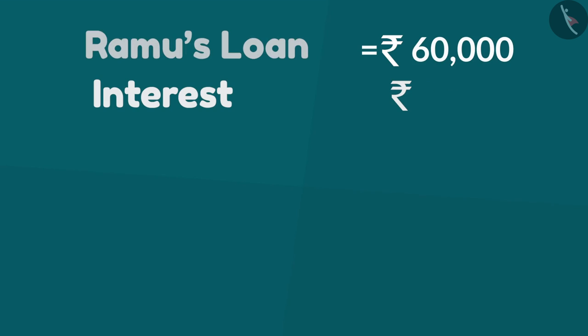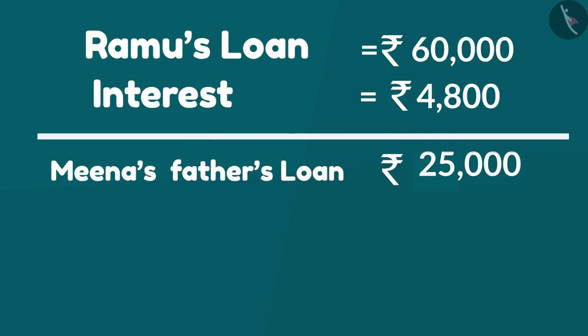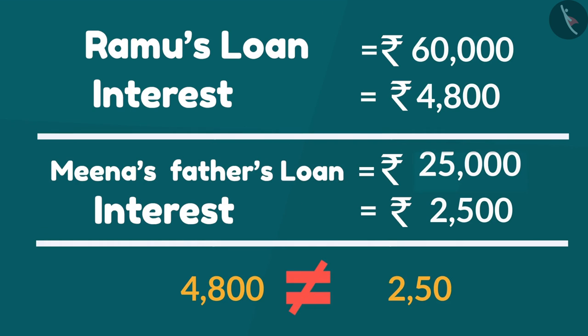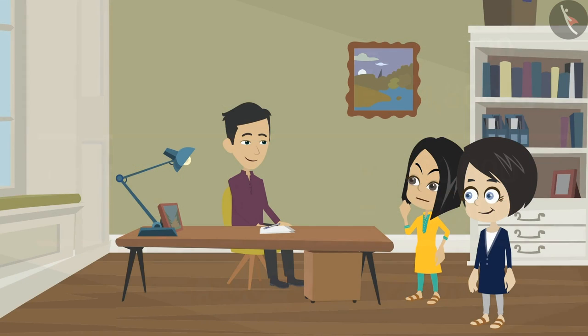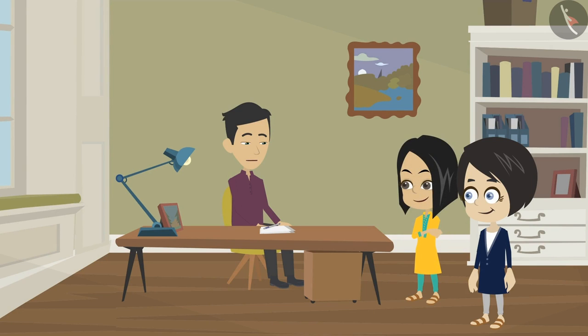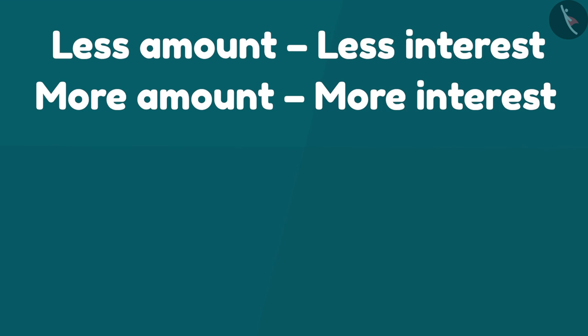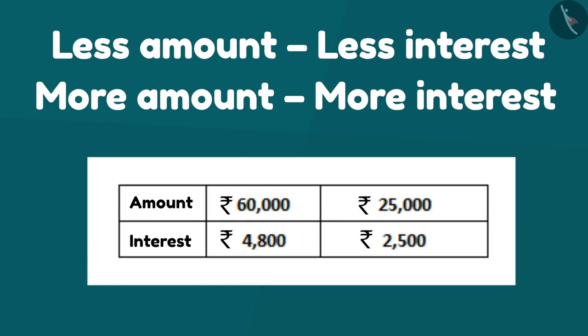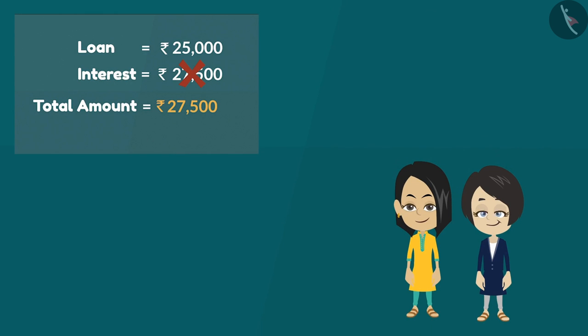But dad, your interest on loan is 4,800 rupees and their interest on loan is 2,500 rupees only — why do we need to pay more interest? Because interest changes according to the loan amount. The interest depends upon the amount of loan taken from the bank. We need to pay lower interest for a lesser amount and higher interest for a greater amount.